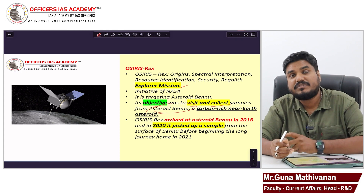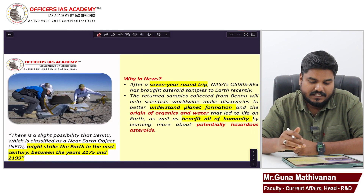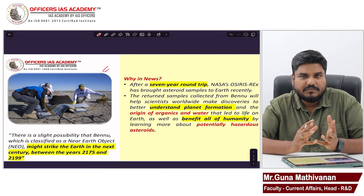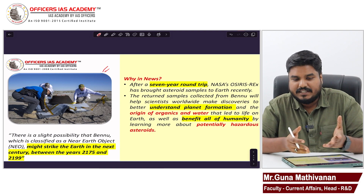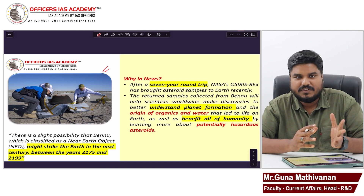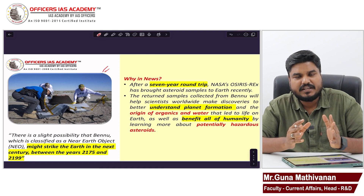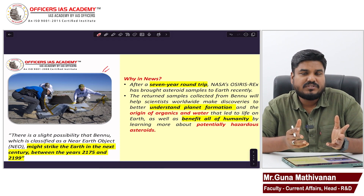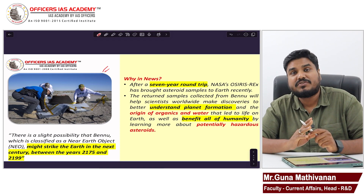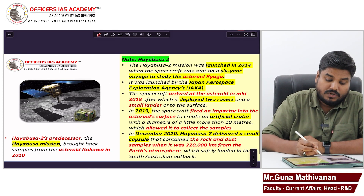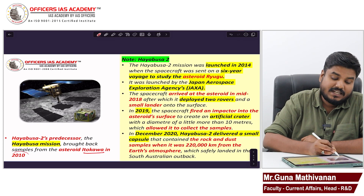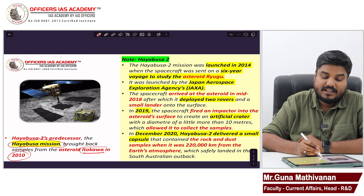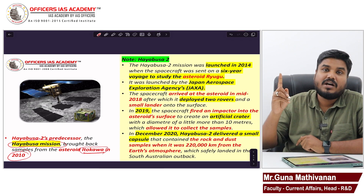That is why this mission is very significant. Such missions are not new — NASA sent OSIRIS-REx in 2016, but Japan's Hayabusa mission, in 2010 itself, visited an asteroid called Itokawa and returned samples in 2010.